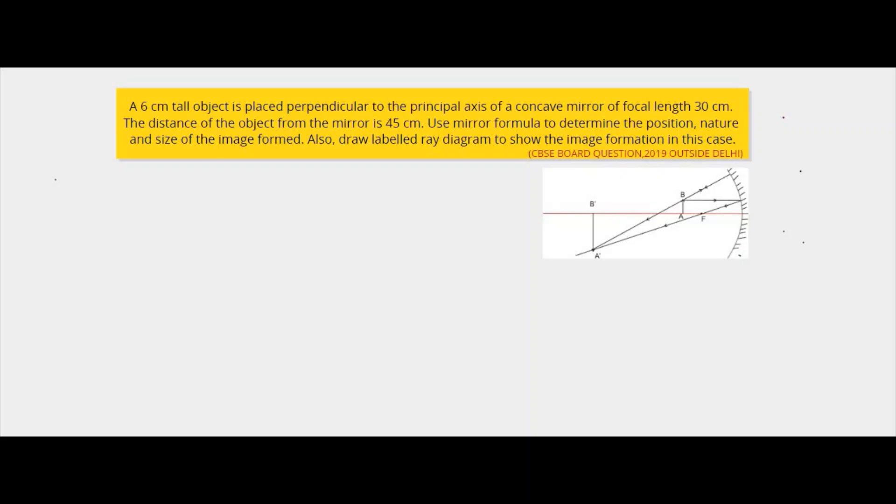The distance of the object from the mirror is 45 cm. Use the mirror formula to determine the position, nature and size of the image formed. Also draw a labeled diagram to show the image formation in this case.